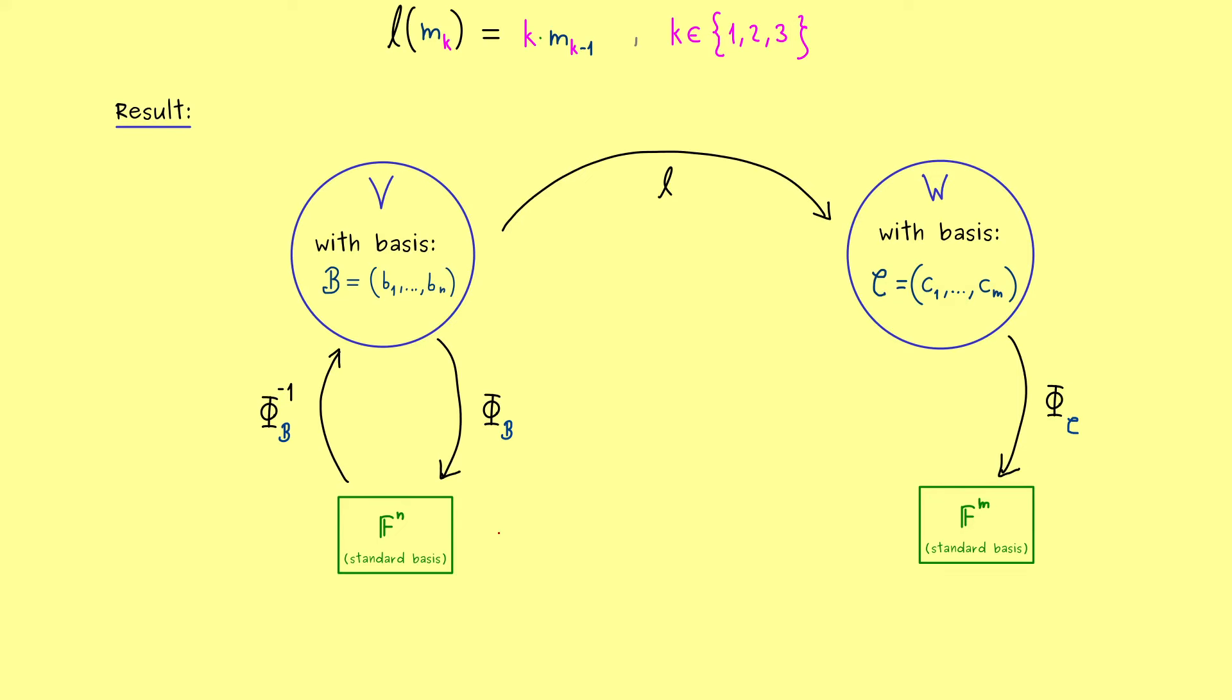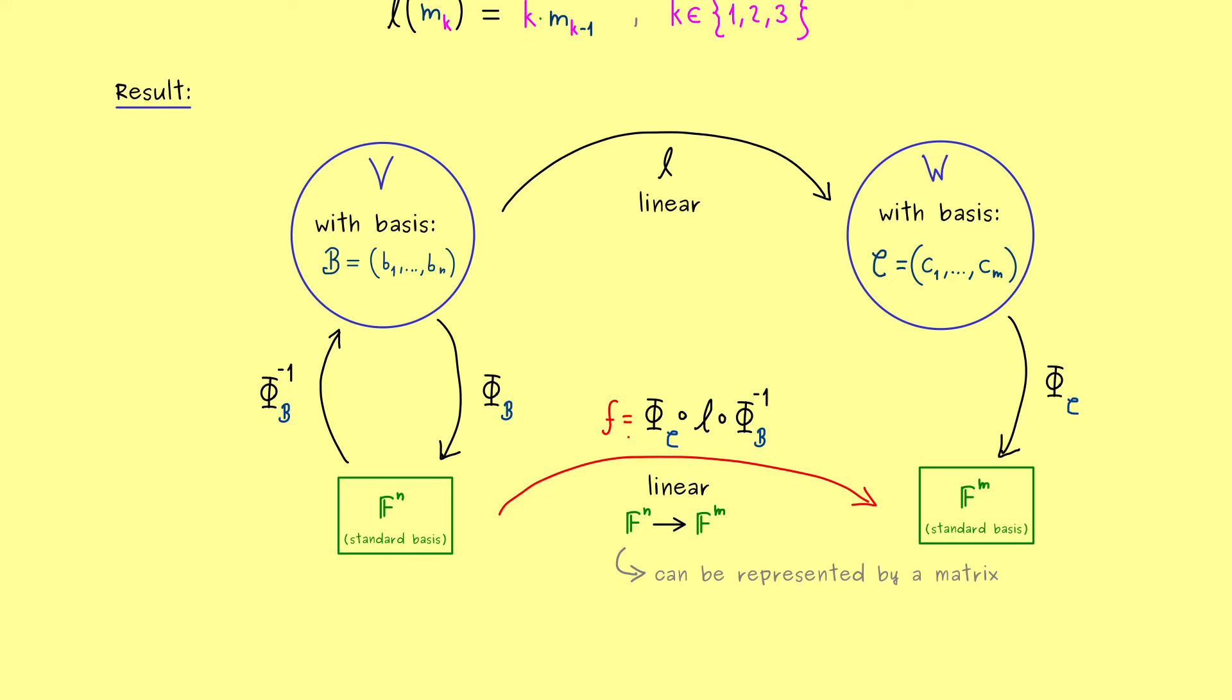And now we immediately see the nice result. Namely, we have a new linear map here on the lower level. Indeed, this is simply a composition of linear maps. First we have this inverse, then comes L, and then the other basis isomorphism. And now since L is a linear map, this is definitely also a linear map, but now from F to the n to F to the m. And in fact, for these linear maps, we already know a lot.